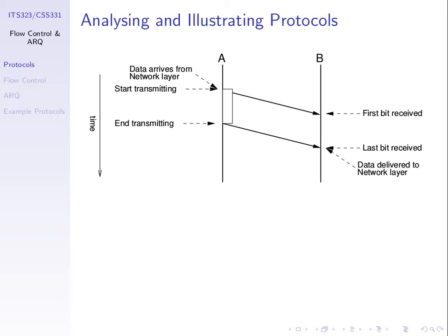We're going to use such diagrams to illustrate the exchange of messages — here just one frame from A to B, but another protocol could have B sending a frame back in return. Once we have such diagrams, we can do simple analysis of delay — how long from one point to another — and throughput, the number of bits per second B can receive.